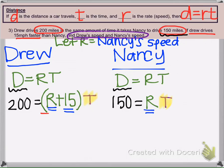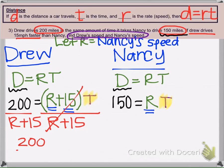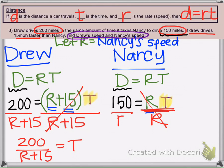So if I were to divide by R plus 15, then I would have 200 over R plus 15 equals T over here. And then over here if I divide by R, then I'd have 150 over R equals T. And then because they equal the same thing, we could then substitute. We could plug this in for that since they both are set equal to T.